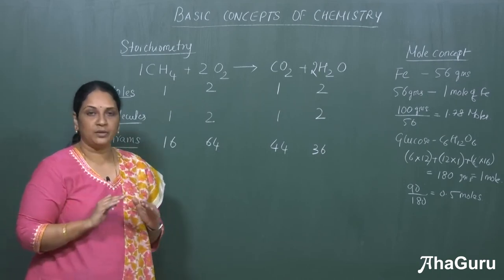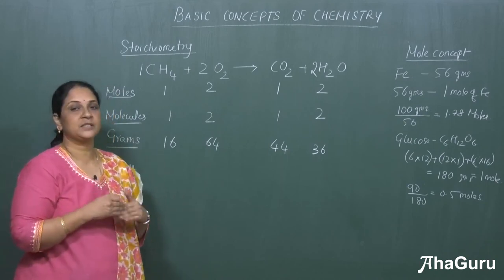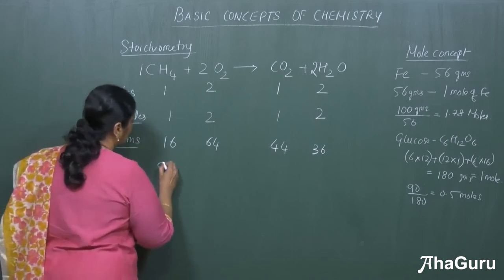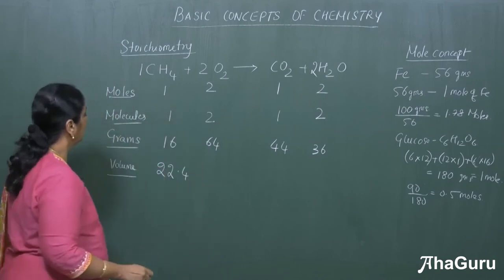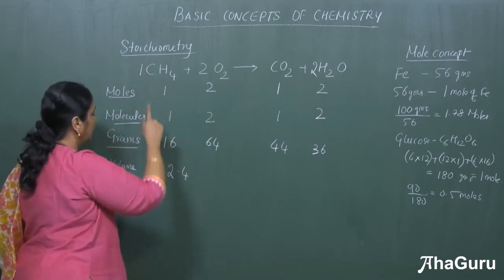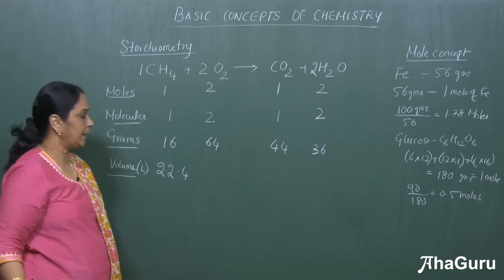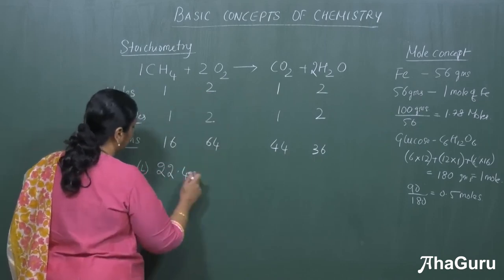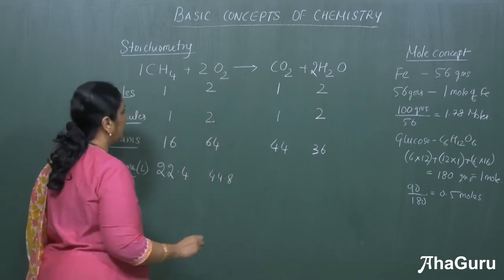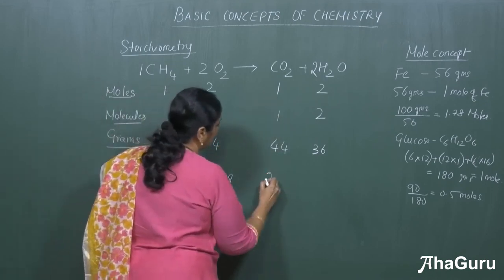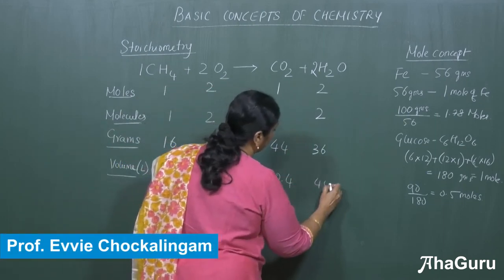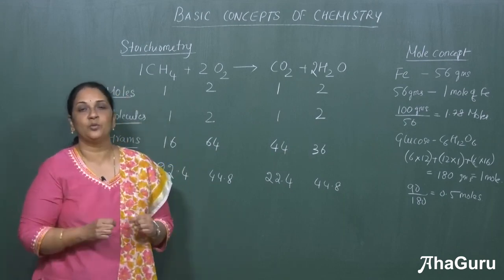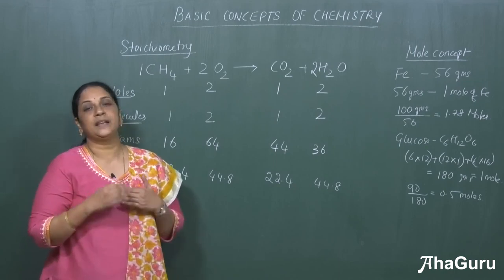For volume, we always take the standard molar volume as 22.4 liters at atmospheric pressure, or 22.7 liters at bar pressure. One mole is equal to 22.4 liters. So for methane: one mole = 22.4 L. For two moles of oxygen: 44.8 L. Carbon dioxide: 22.4 L, and two moles of water: 44.8 L. For any chemical calculations, you must know the mole concept thoroughly and be able to balance equations.